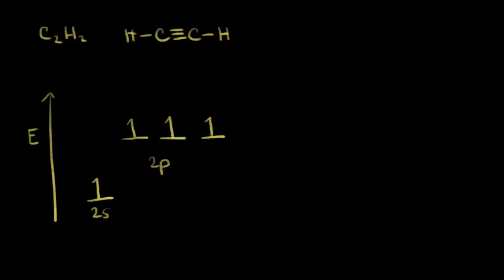In the video on sp3 hybridization, we saw carbon was bonded to four atoms. In the video on sp2 hybridization, we saw that carbon was bonded to three atoms. In this video, we're going to look at the type of hybridization that's present when carbon is bonded to two atoms. Looking at this carbon in ethyne, or the acetylene molecule, this carbon is bonded to a hydrogen and also to another carbon. The shape of the acetylene molecule has been determined to be linear, with a bond angle of 180 degrees.